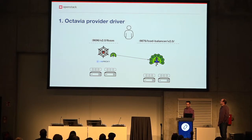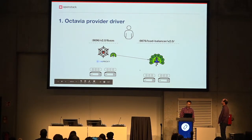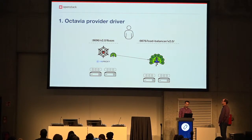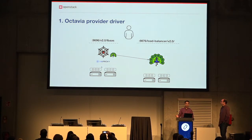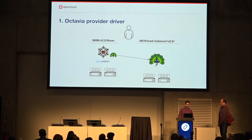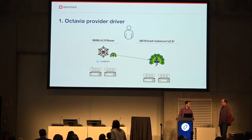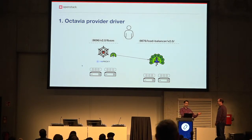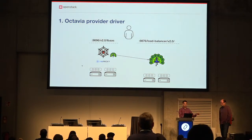If you have Neutron, you can enable the Octavia provider driver and it will talk with the Octavia project. Simultaneously, you can still have other load balancers — for instance with HAProxy, the namespace driver which was the old reference implementation. Octavia has been the reference since then. But you can also have VMware, F5, and other load balancers alongside.